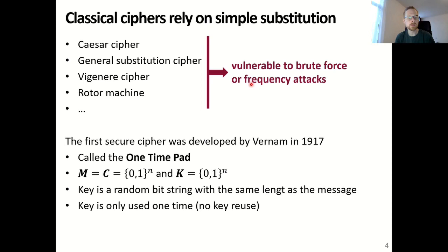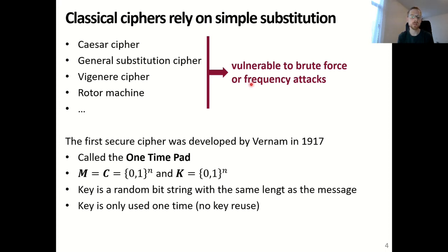The first secure cipher was developed by Vernum in 1917. This cipher is not vulnerable to brute force or frequency attacks, and it is called the one-time pad. In the one-time pad, the message space, ciphertext space, and key space are all equal — they all consist of a bit pattern of 1s and 0s of size n. The key is a random bit string of the same length as the message, and the key is only used one time, meaning there is no key reuse. This is very important for the security of the algorithm.